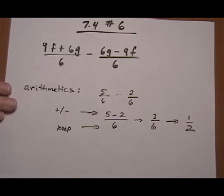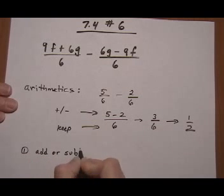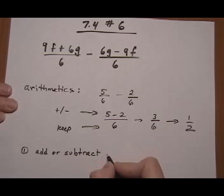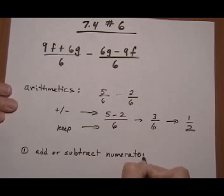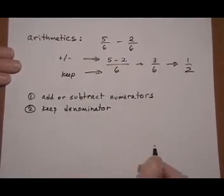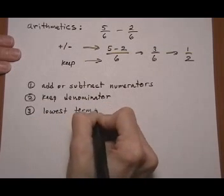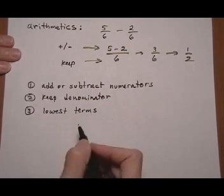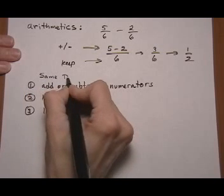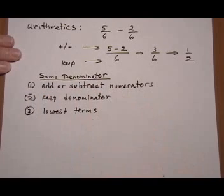So we're going to use the same general rules here. We're going to add or subtract numerators, and then keep the denominator, and put it in lowest terms. And this is for when we have the same denominator to start with.